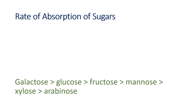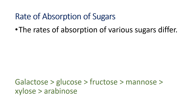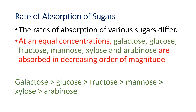Regarding the rate of absorption of sugars: the rates of absorption of various sugars differ. At equal concentration, galactose, glucose, fructose, mannose, xylose, and arabinose are absorbed in decreasing order of magnitude. Galactose has a higher rate of absorption than glucose, glucose is absorbed faster than fructose, fructose faster than mannose, mannose faster than xylose, and xylose faster than arabinose. This concludes our discussion of carbohydrate digestion and absorption.